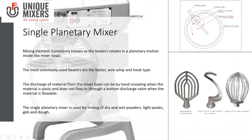One of the favorites when it comes to mixing dough or making batters is the single planetary mixer. As the name suggests, the mixing takes place due to the planetary motion of the blades. As you can see on your top right, there's a planetary beater. The planetary beater rotates along the periphery of the vessel, and at the same time, it rotates on its own axis — that is why it is called a single planetary mixer.